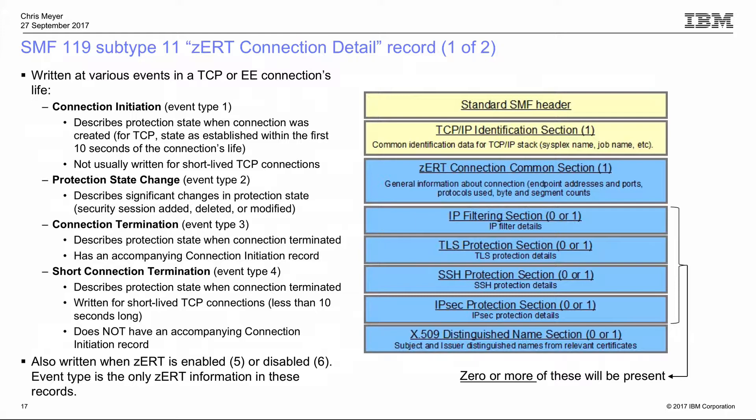You also see a Distinguished Name section, since several protocols can use X.509 certificates — if certificates are in use, the subject and issuer distinguished names appear there. And there's an IP Filtering section, which can even appear for clear text connections. This records which IP filter names apply to a connection. If you use IPsec, you'll always have an IP Filtering section, but you could also see it for connections subject to a plain permit filter.